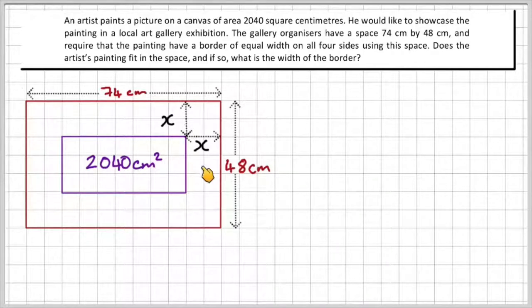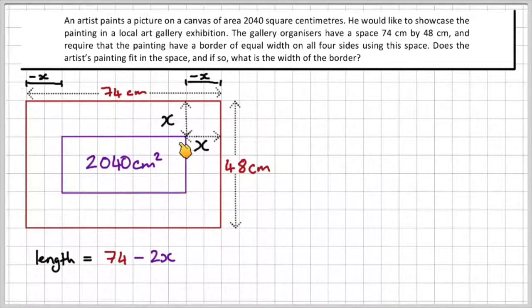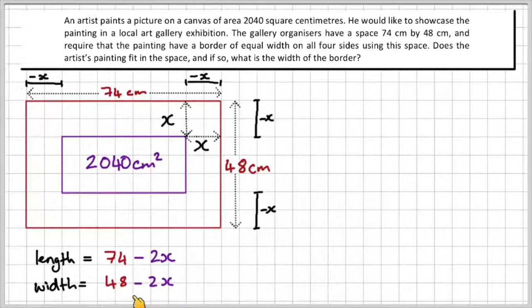So remember that the art gallery required that there's an equal width around each of the four sides of the painting. So this must be X, and that must be represented by X as well. So in order to get the length of the painting, we're taking away this value of X and another value of X here. So we've got 74 minus 2X. And then the width is the same idea. In order to work out this part, we're going to do 48 minus X and minus X. So 48 minus 2X.